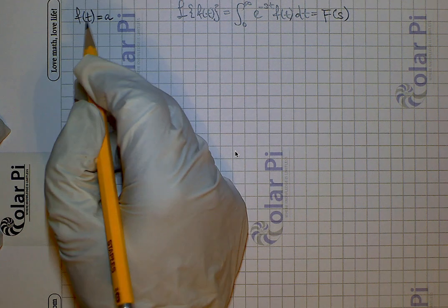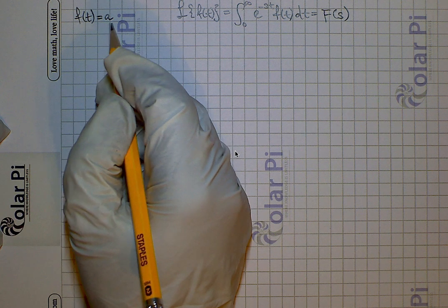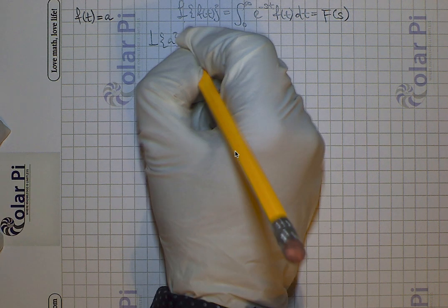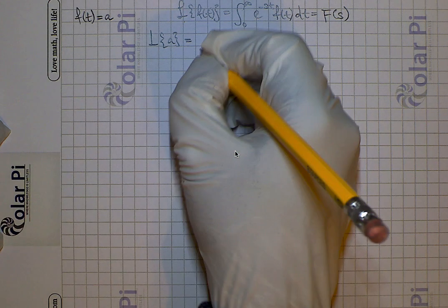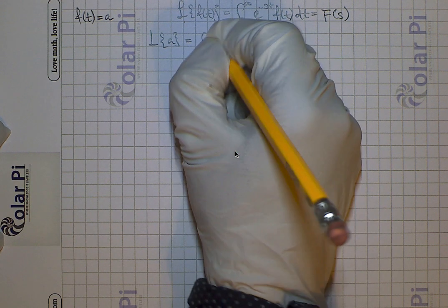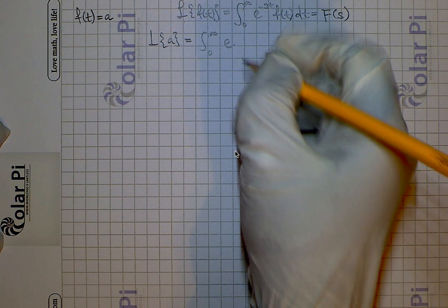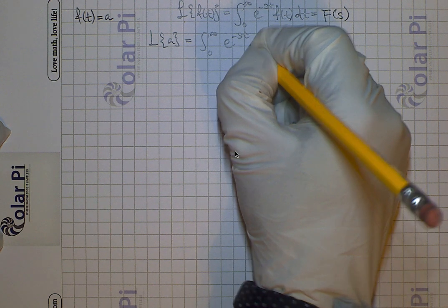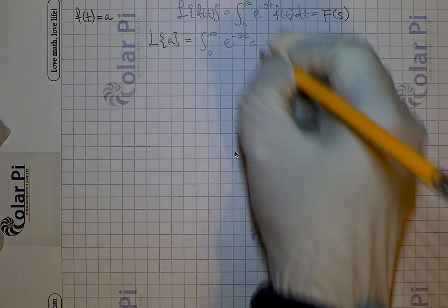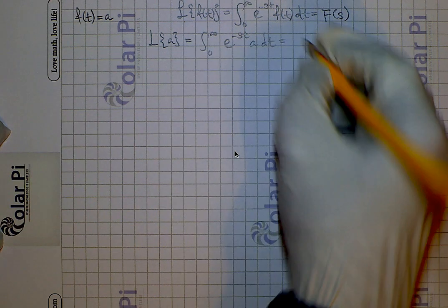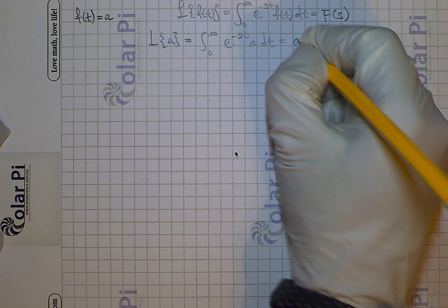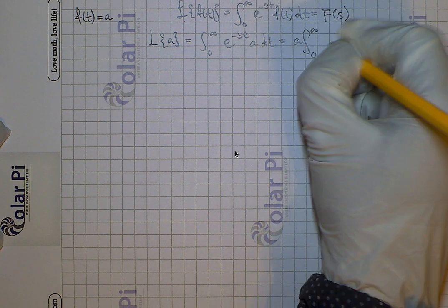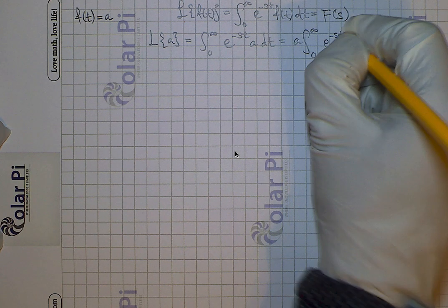In this example the function is just a constant function f of t equals a, so L of f of t equals a is going to equal the integral from 0 to infinity of e to the negative st times a dt. And since we can write a constant in front of the integral, we can write that as a times the integral from 0 to infinity of e to the negative st times dt.